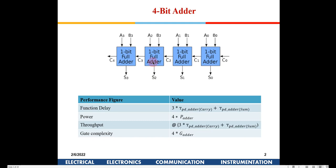Let's first try to understand what pipelining means. I have taken the example of a 4-bit adder to explain what pipelining is all about and what its advantages are. If you implement a 4-bit adder, you can have four 1-bit full adders cascaded. In the leftmost stage you have the carry coming from the previous stage and the least significant bits of the two 4-bit numbers which need to be added.